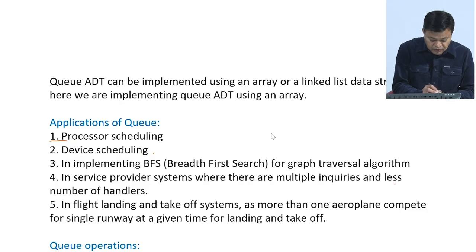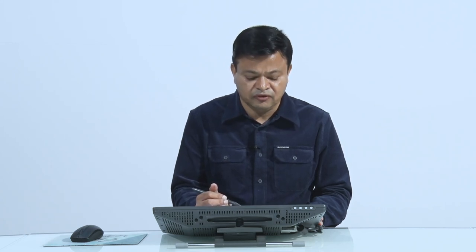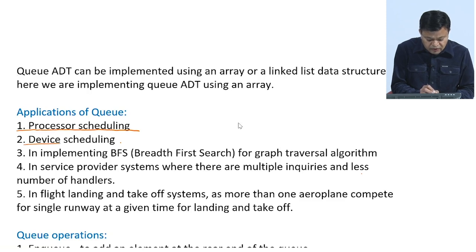Before going to implementation, we will look at some applications of a queue. The first one is processor scheduling — if we have a single processor and more than one process competing for it at the same time, we maintain a queue of all waiting processes. The second one is device scheduling — if we have a single output device and more than one user wants to use it simultaneously, we again maintain a queue of users.